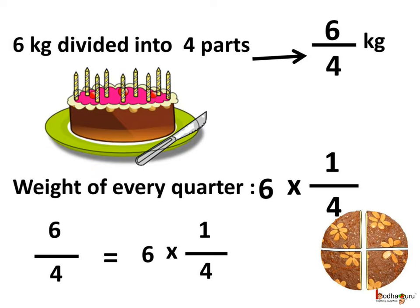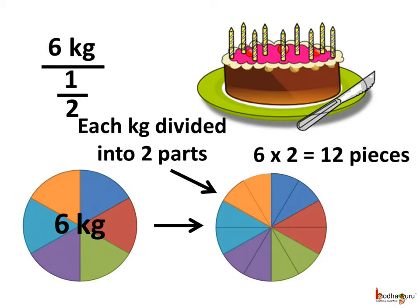Dividing by 4 actually means multiplying by 1 by 4. If someone asks you to cut the pineapple cake which is 6 kg into pieces such that each piece weighs half kg, then how many pieces would there be? Each 1 kg cake would be divided into 2 half-kg pieces. The cake weighs 6 kgs, so total pieces would be 6 multiplied by 2, which is equal to 12.